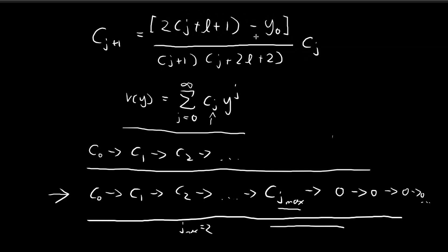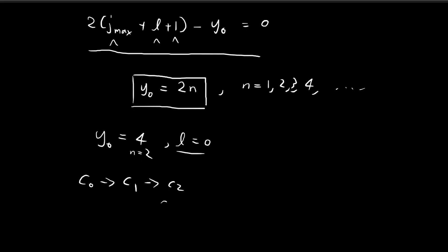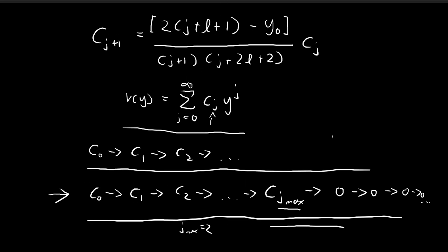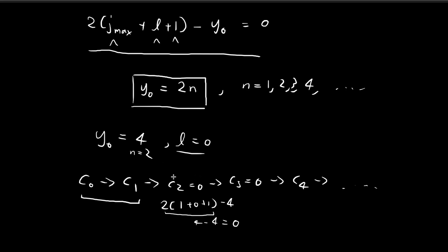From the recursion formula, c₂ equals c₁ multiplied by a term whose numerator is 2(j + l + 1) − y₀. With j = 1, l = 0, and y₀ = 4, we get 2(1 + 0 + 1) − 4 = 4 − 4 = 0. So c₂ = 0, meaning c₃, c₄, and all subsequent terms are zero. Only c₀ and c₁ are non-zero, so v(y) is normalizable. This is the whole process of generating solutions with the restriction that y₀ must be an even integer.